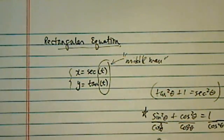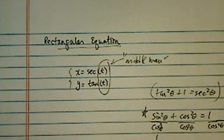And then the equation comes out because this one becomes tangent theta. This is 1, and this one is secant squared.